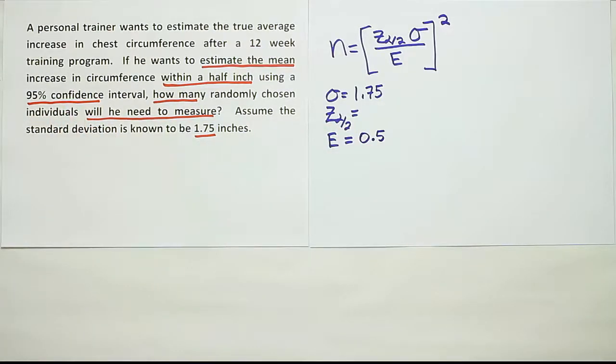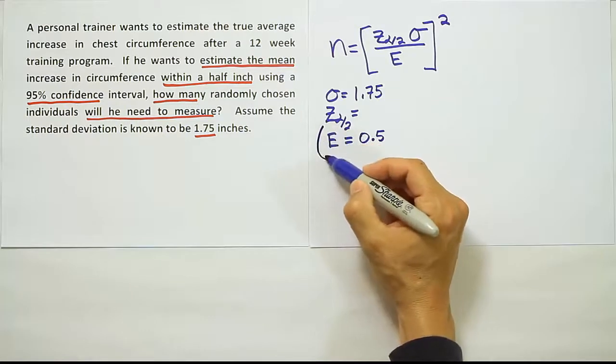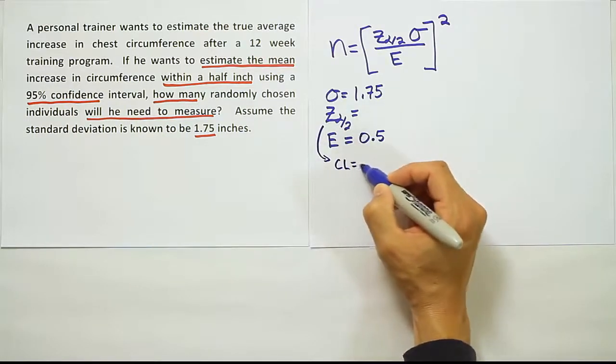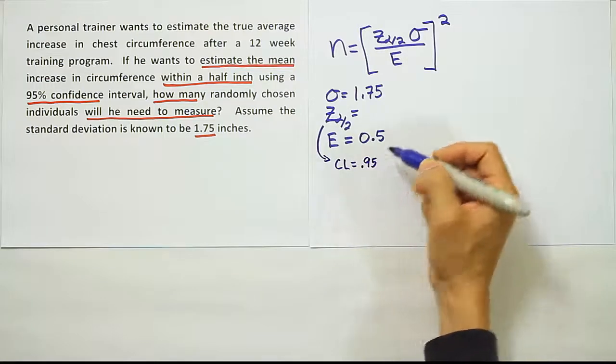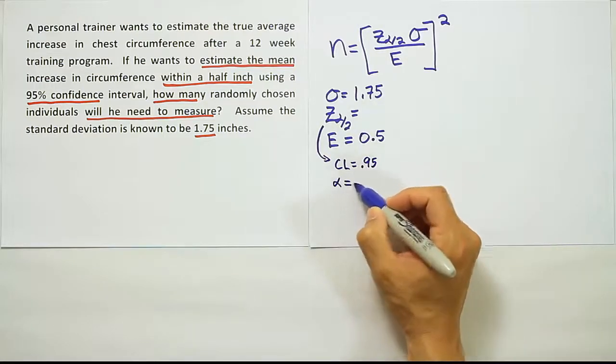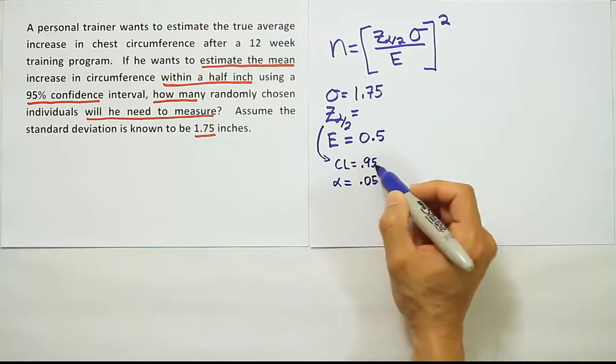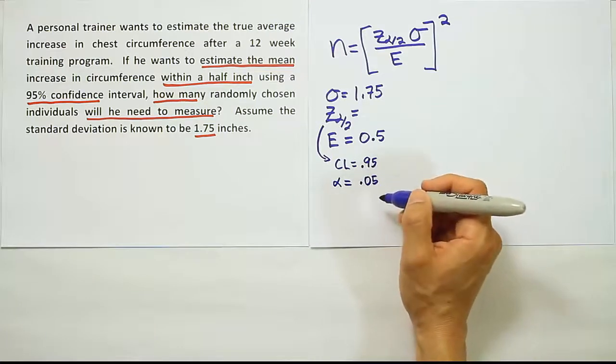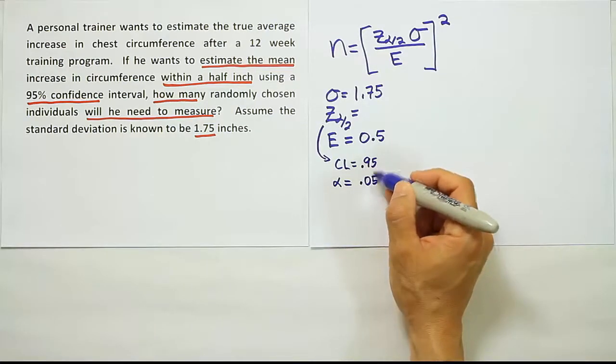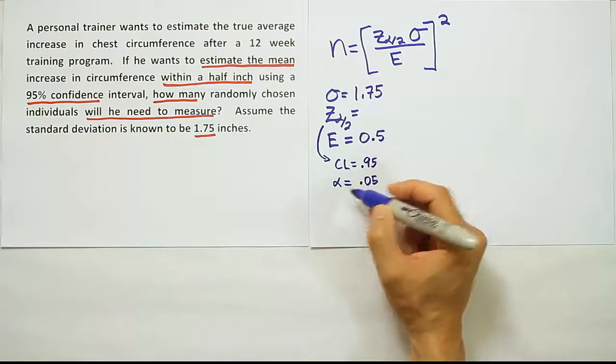That leads to the idea that alpha equals 0.05, because confidence level and alpha must add up to 100%. So 0.95 or 95% plus 5% gives you 100. So that's alpha.